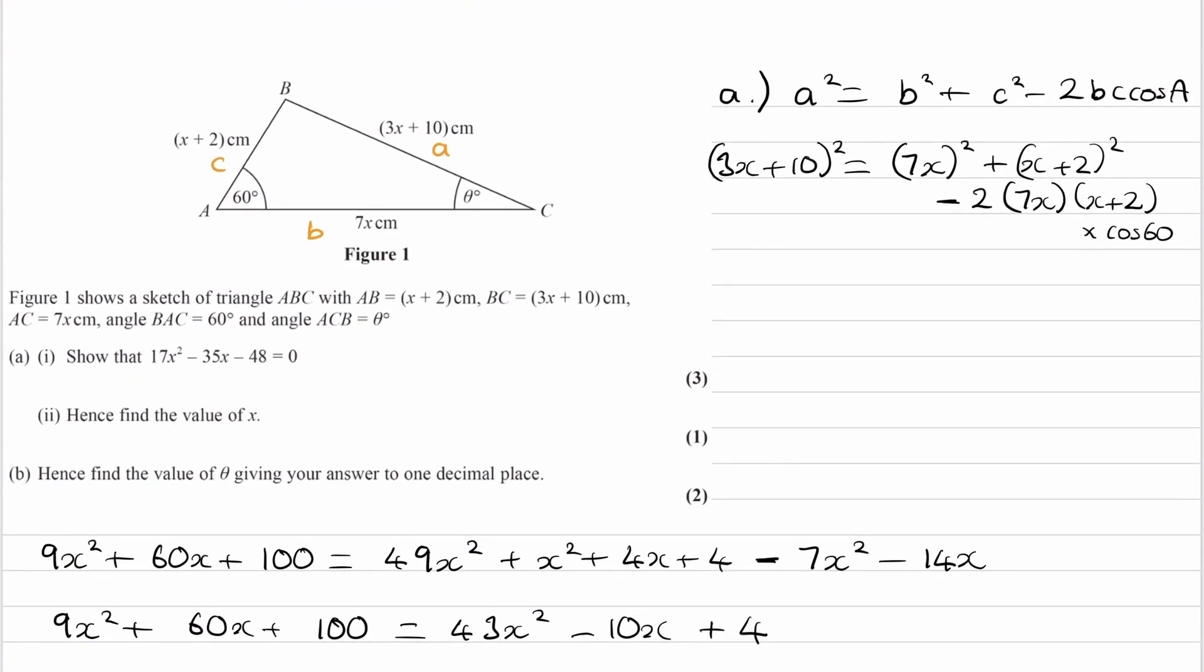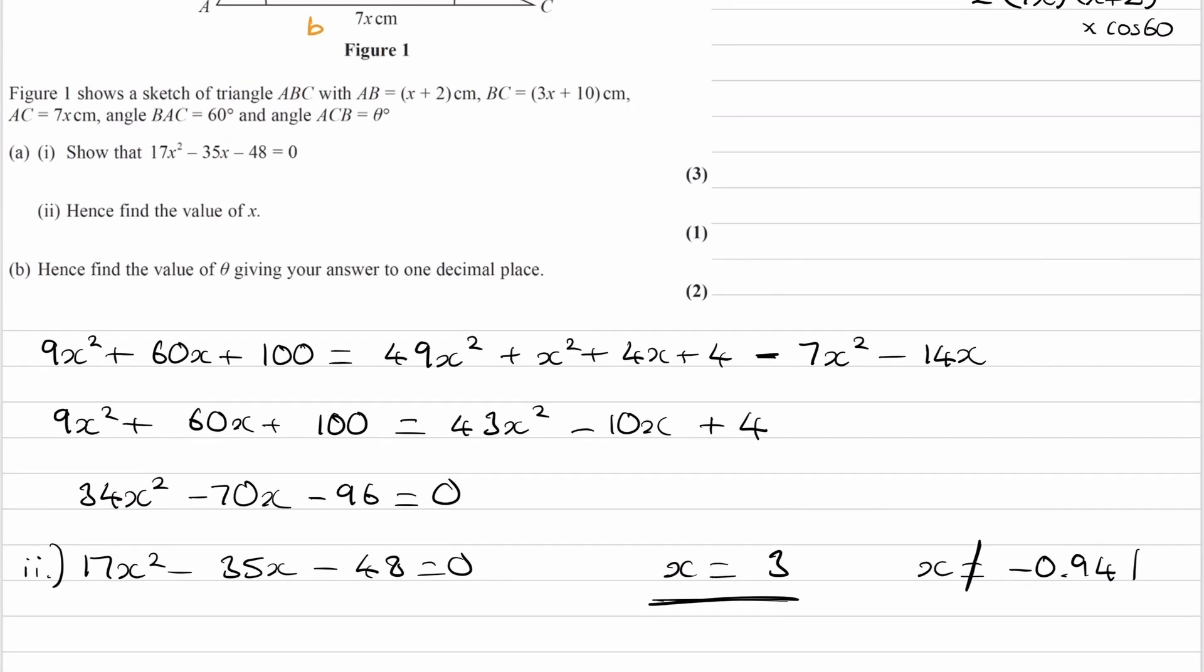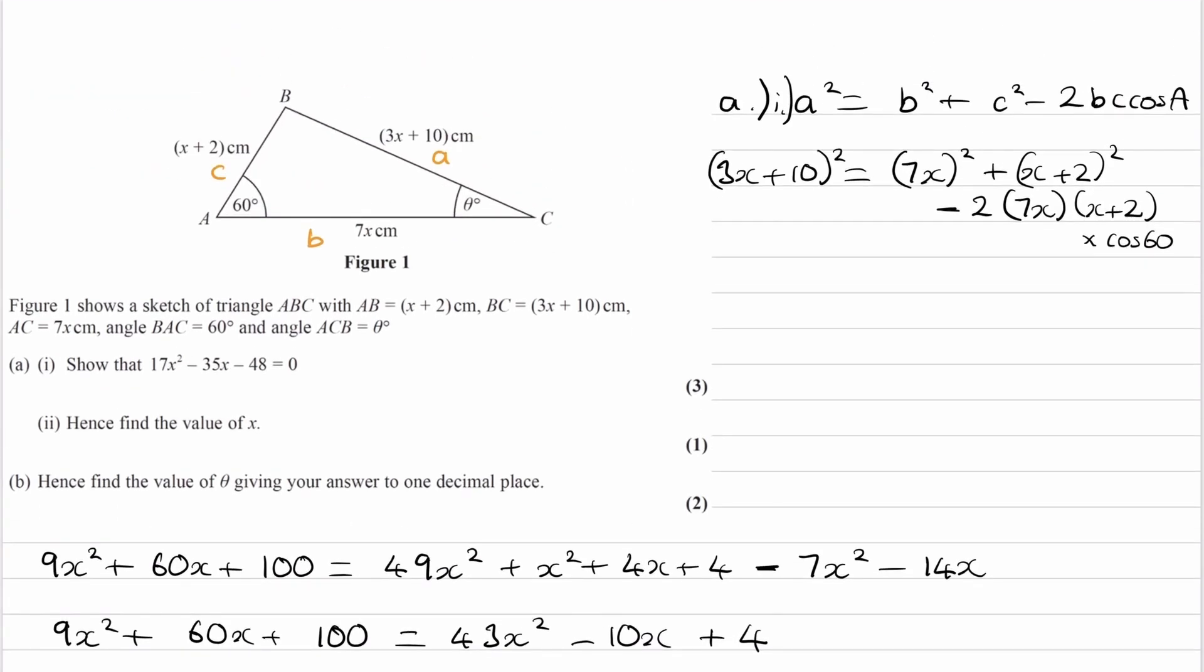Okay. So on to part B. Hence, find the value of theta. Let's just write on our triangle what sides we have now. So we know that x is equal to 3. So this side will be 21. This side will be 19. And this side will be 5. We're now trying to work out what theta is.